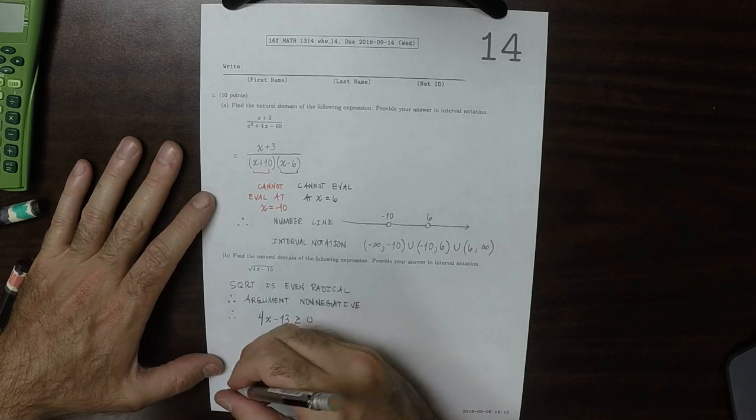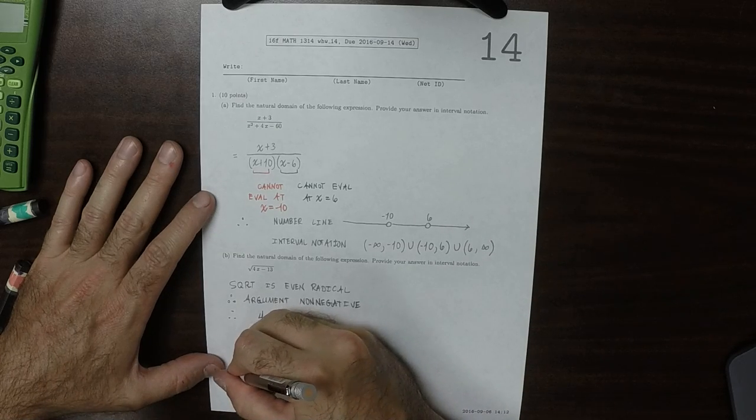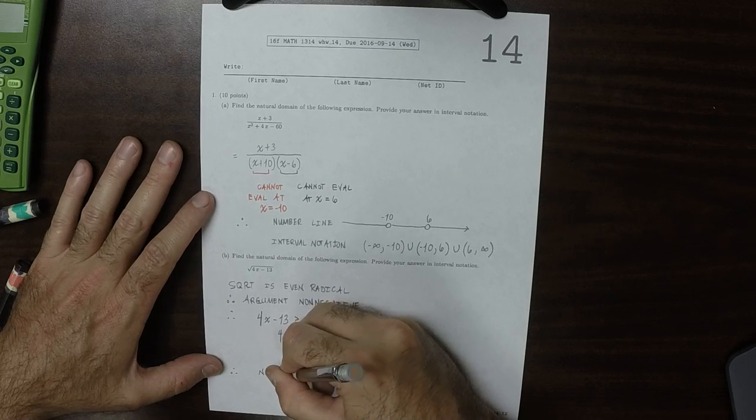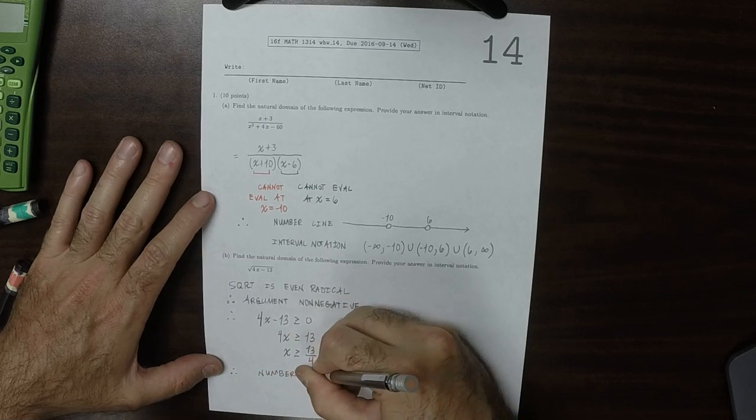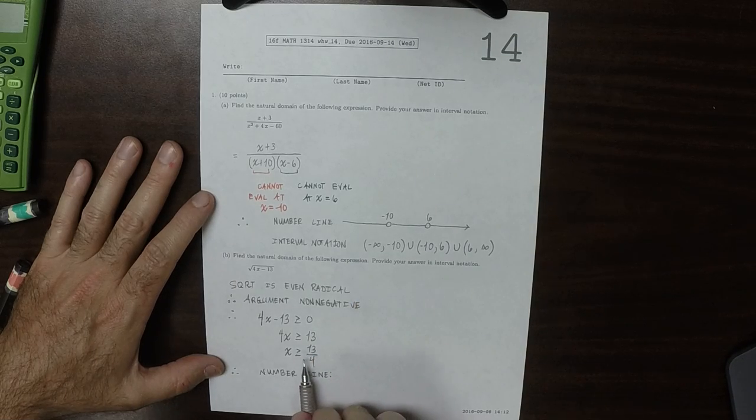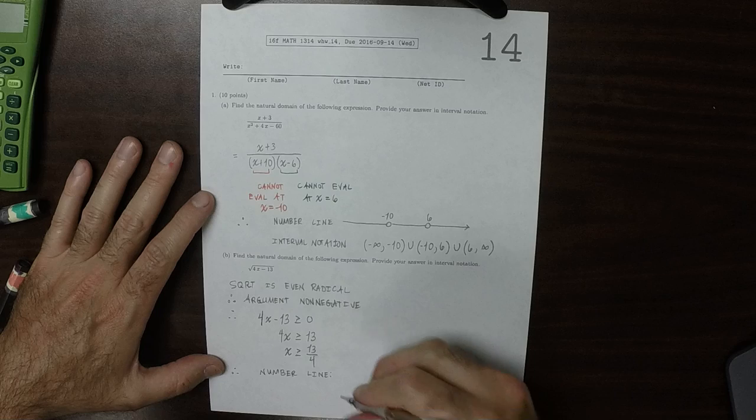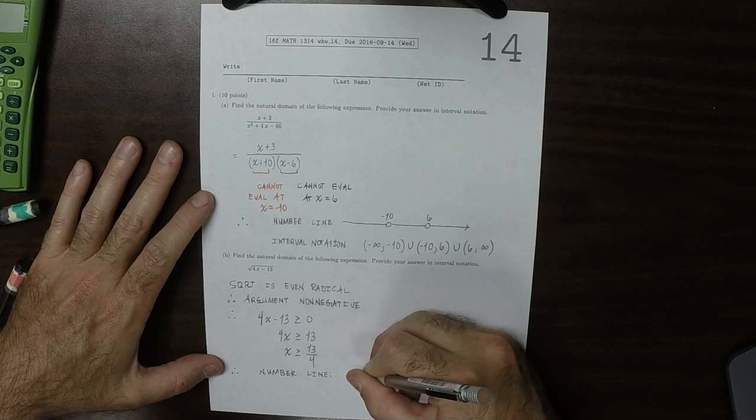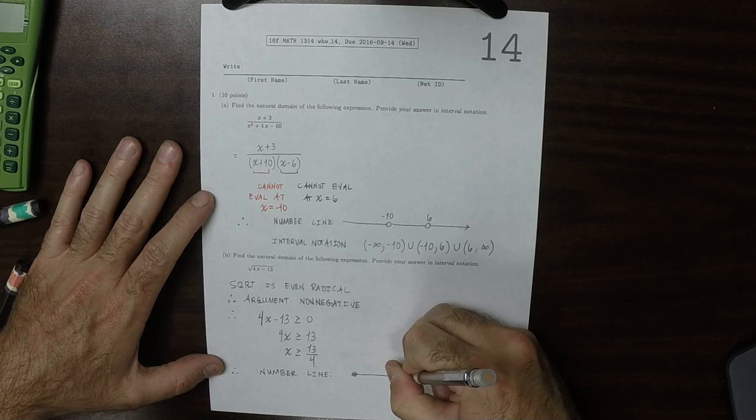As a number line, that is to say, 13 over 4 is alright, and so is anything bigger. So solid at 13 over 4, and then everything to the right.